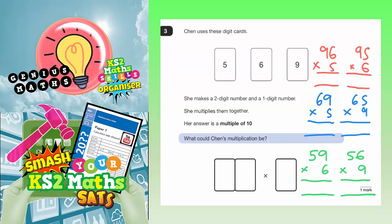Question 3. Chen uses these digit cards: 5, 6 and 9. She makes a 2 digit number and a 1 digit number. She multiplies them together. Her answer is a multiple of 10. What could Chen's multiplication be?